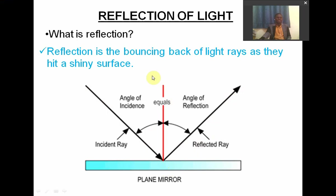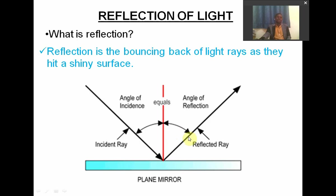Let's look at this diagram more carefully. In the middle here, we are seeing a red line — this red line represents a normal ray. In between the incident ray and the reflected ray, we have what we call a normal ray. When the incident ray meets with the normal ray, an angle is formed in between, and the name of that angle is the angle of incidence: I-N-C-I-D-E-N-C-E.